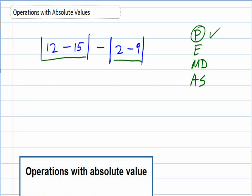So, in the first one, just going left to right, 12 minus 15. Whenever we subtract those, we get negative 3. Of course, the absolute value symbols are still there. And then for the 2 minus 9, I get negative 7.